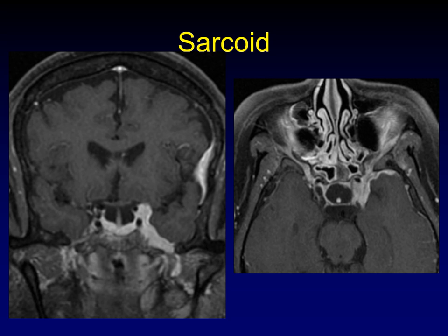Sarcoid can cause linear tiny areas of enhancement along nerves, or it can cause bulky enhancement along nerves. This looks exactly like the very first case in this lecture called a classic appearance for perineural spread of tumor — thickening of the nerve, abnormal enhancement of the nerve, expansion of the foramen. It's got all the classic signs, plus some enhancement in other areas. You can see the same findings coming into Meckel's cave, expanding Meckel's cave, and then extending along the dura of the middle cranial fossa. This is sarcoid — it looks just like perineural spread.